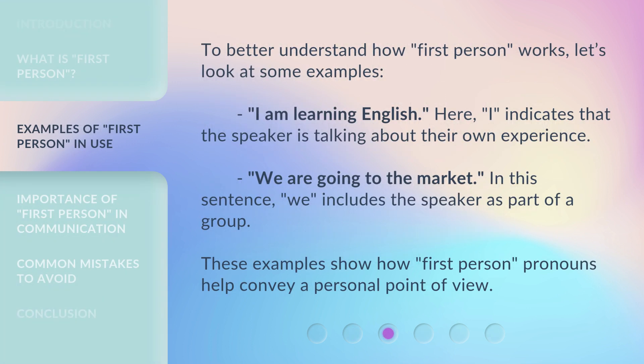To better understand how first person works, let's look at some examples. 'I am learning English.' Here, I indicates that the speaker is talking about their own experience. 'We are going to the market.' In this sentence, we includes the speaker as part of a group. These examples show how first person pronouns help convey a personal point of view.